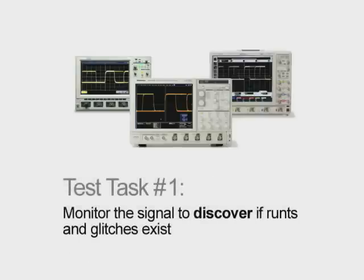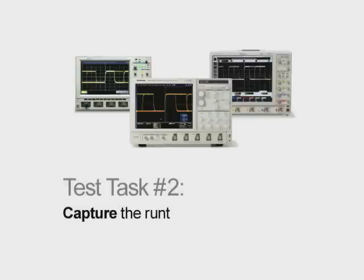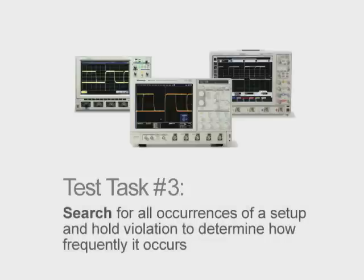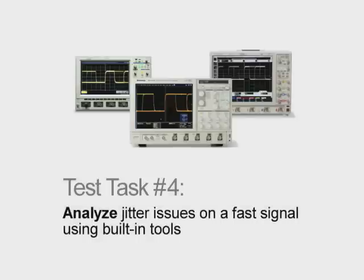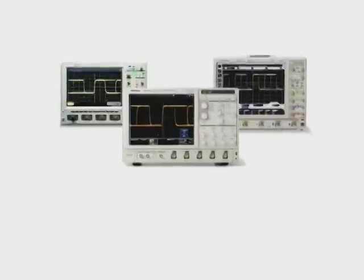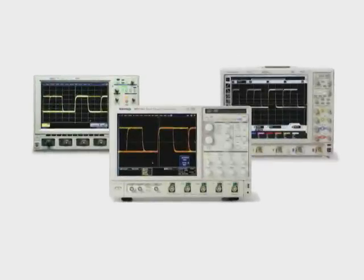1. Monitor the signal to discover if runts and glitches exist. 2. Capture the runt. 3. Search for all occurrences of a setup and hold violation to determine how frequently it occurs. 4. Analyze jitter issues on a fast signal with built-in tools. Let's find out how each scope performs in addressing these tasks.